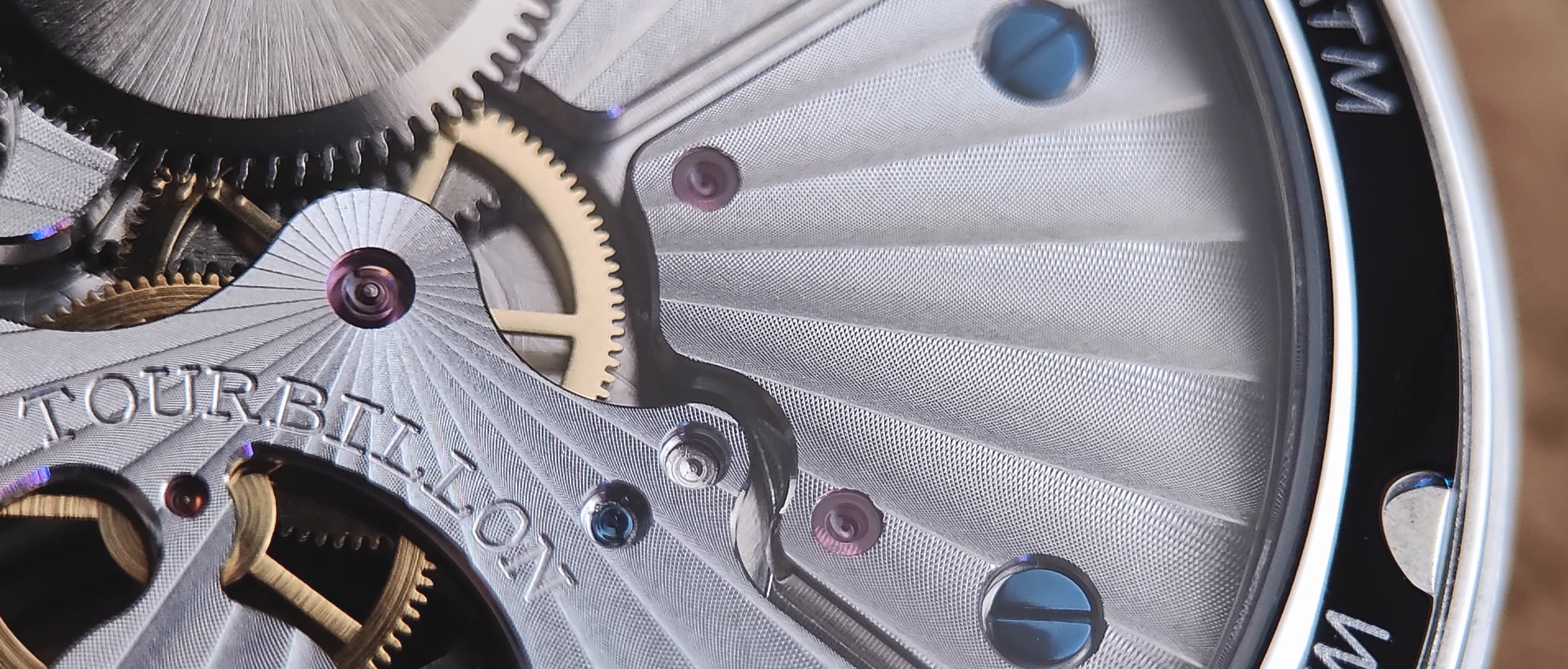Besides all that, I want to talk about the main attraction of this watch, which is the beautiful tourbillon sitting at 6 o'clock. Seagull had mainly two tourbillon calibers, the ST8000 and the ST8230, and a few variations that stem from this same family of tourbillons. I picked the 8230 as I preferred the central balance wheel to the offset balance found in the ST8000. It just looks more symmetrical to me.